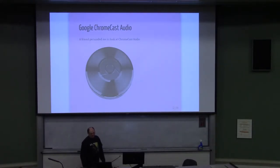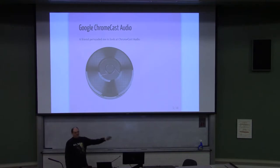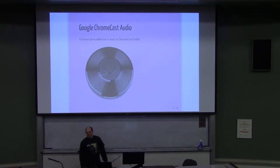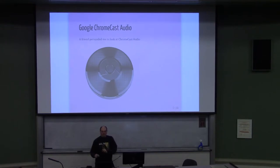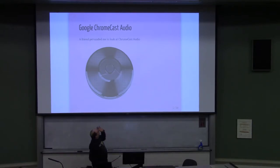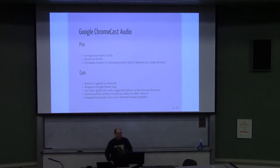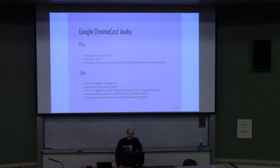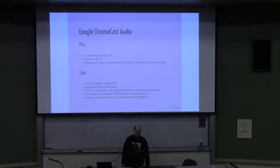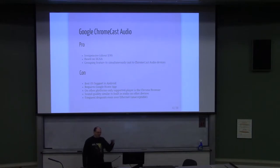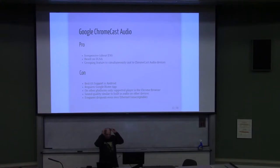A friend suggested I look at Chromecast Audio. The great thing is they're really cheap — about 30 bucks. The Chromecast Audio is different from the regular Chromecast: it only has audio out. It has a headphone jack and a proprietary version of a TOSLINK cable, which means the first time you go to Best Buy and ask for a TOSLINK cable for Chromecast, the sales guy gives you the wrong one because you need a special cable only used by Chromecast.